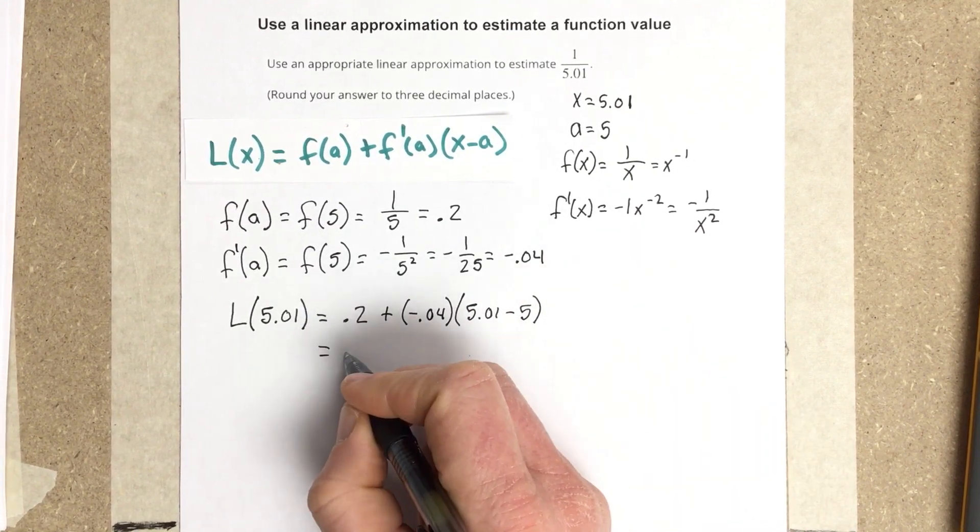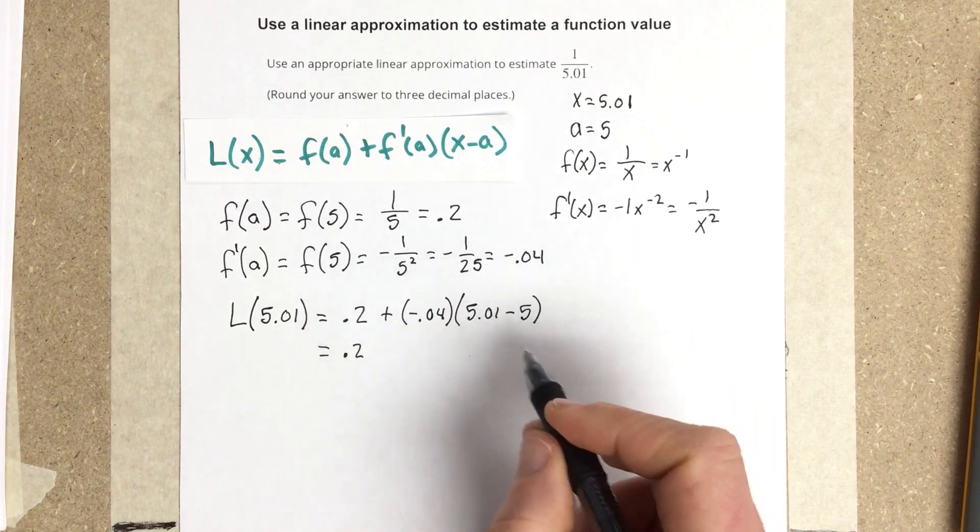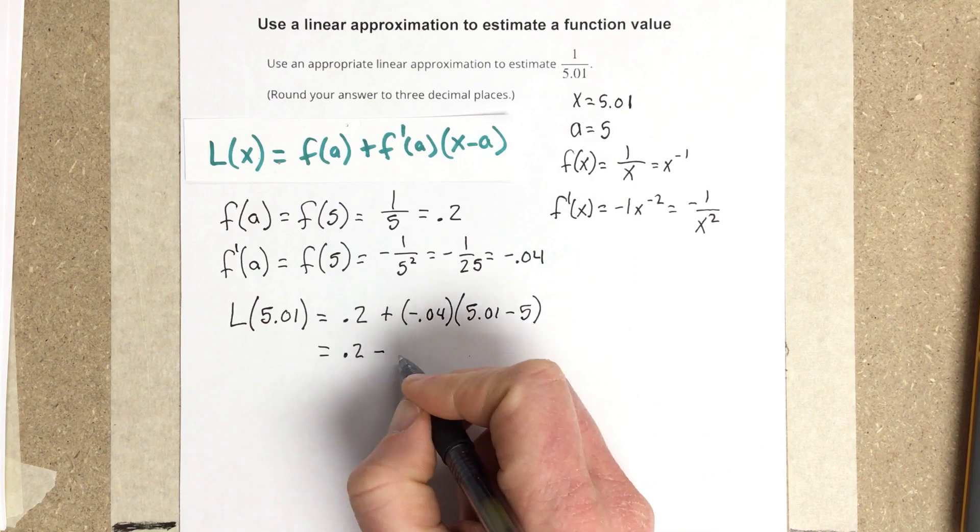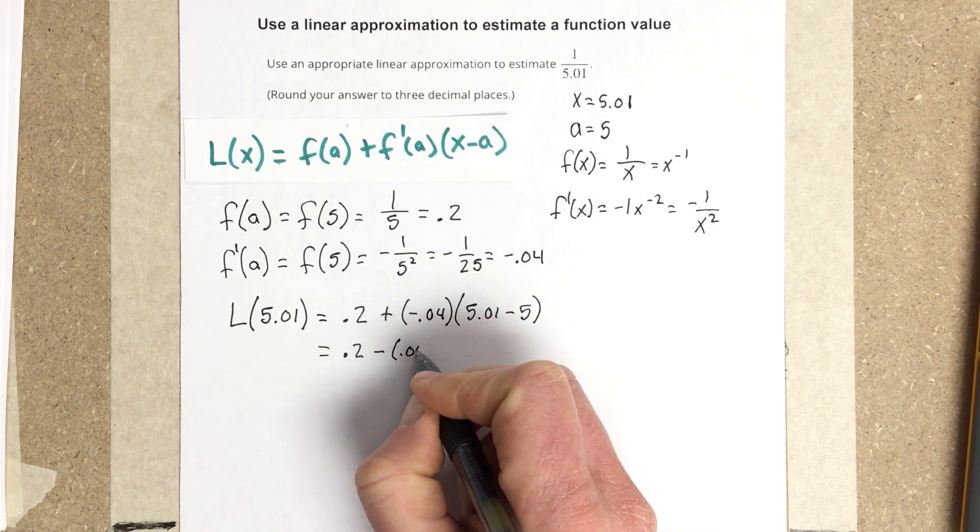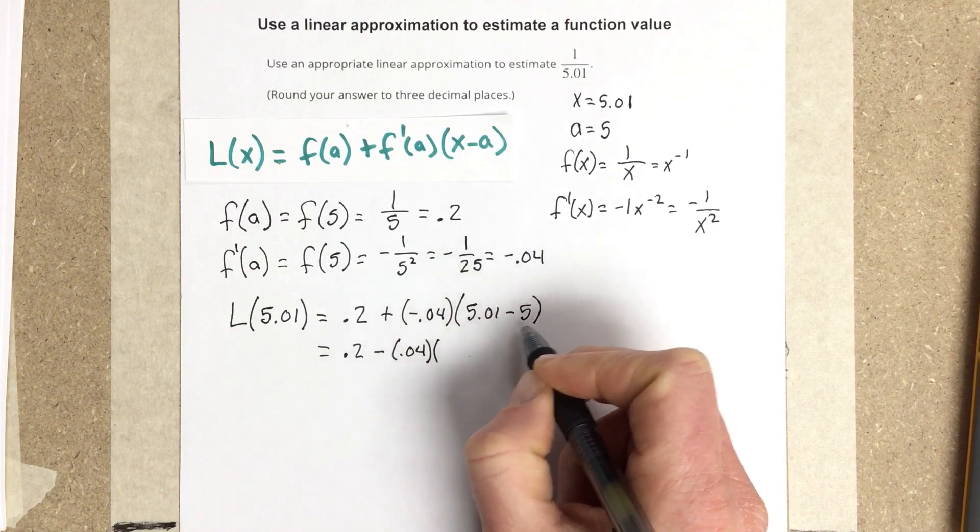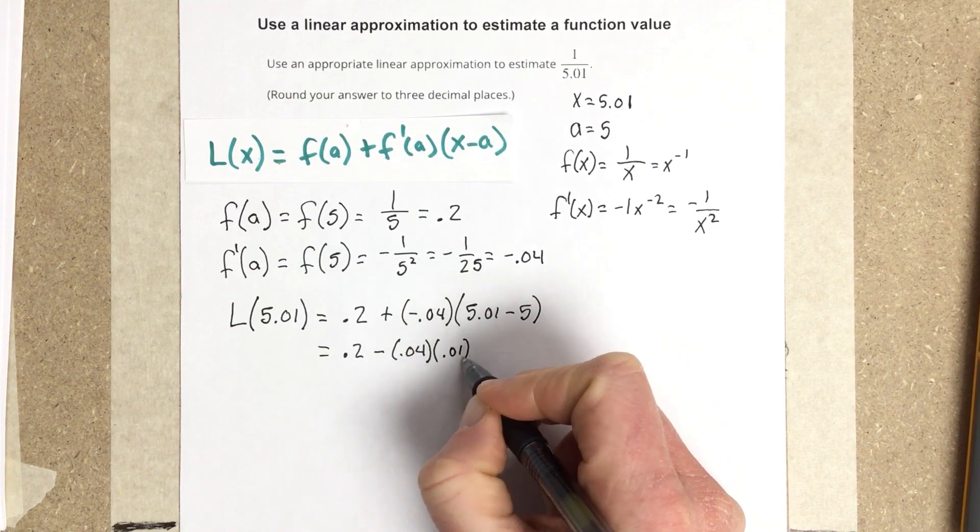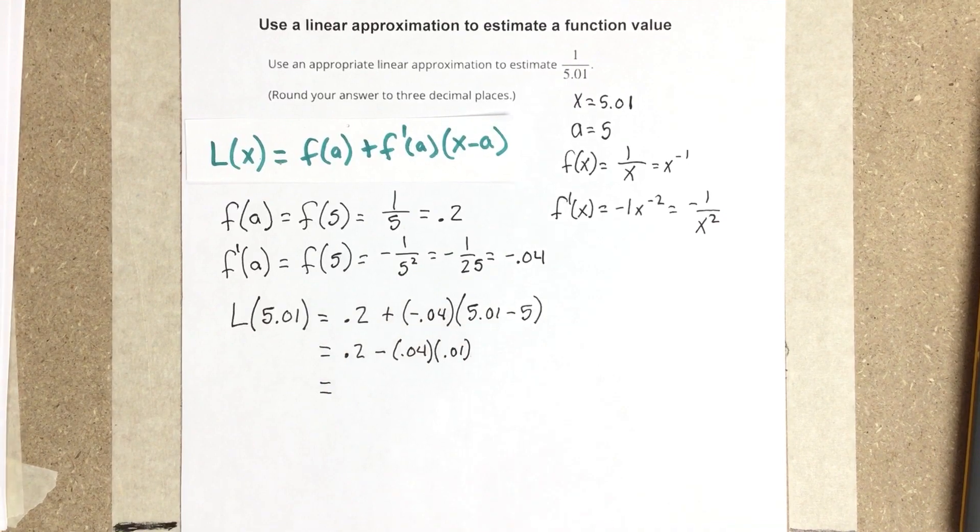So I end up with 0.2. And this would be minus 0.04 times, this is 0.01. So I end up with, let's put all that in the calculator.